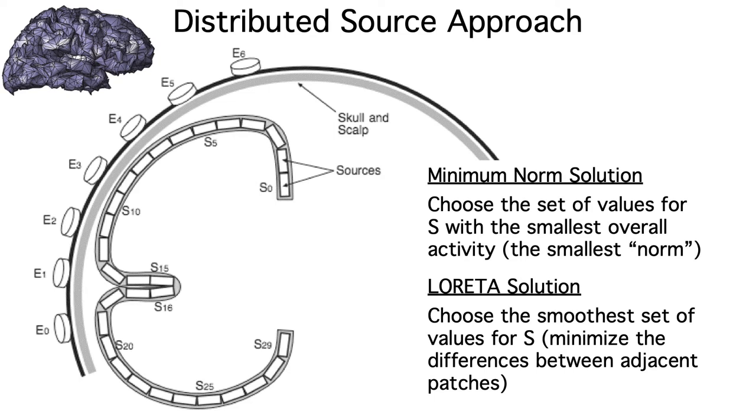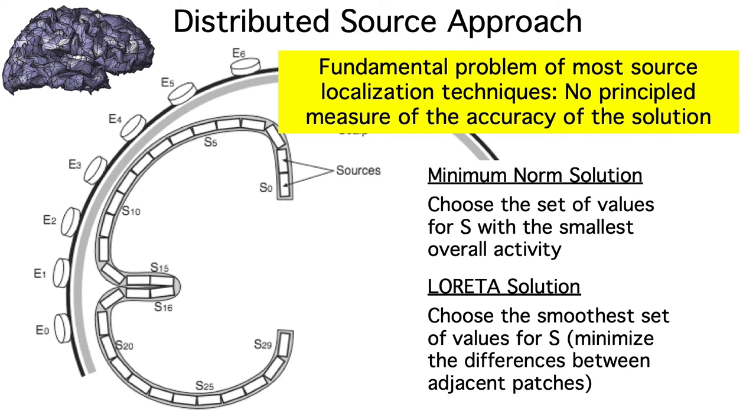We have no reason to believe that either of these solutions captures the true distribution of activity across the cortex in every situation, or even in any single situation. This brings up the fundamental problem with almost every mathematical approach to source localization. They provide no principled measure of the accuracy of the solution.